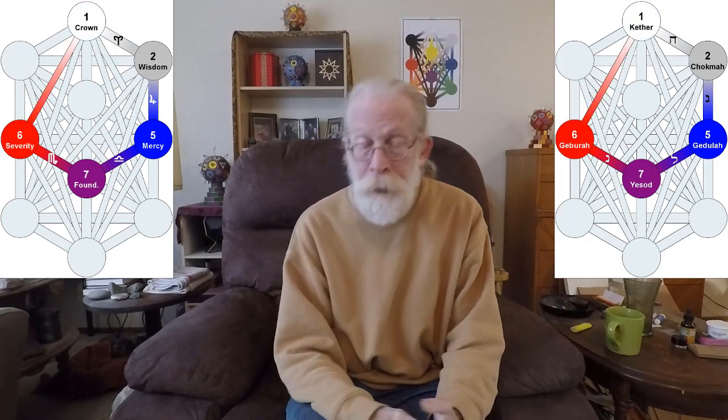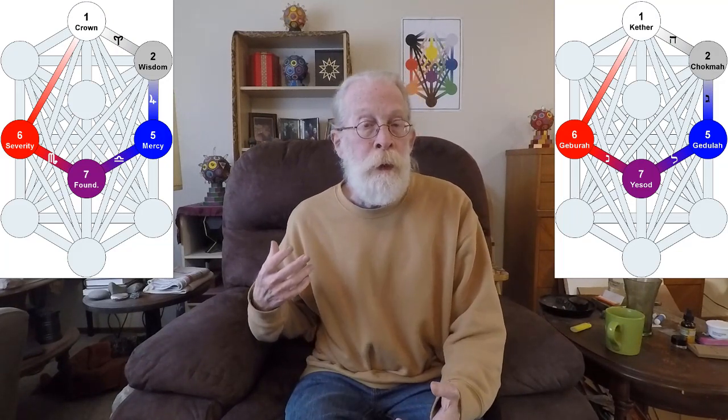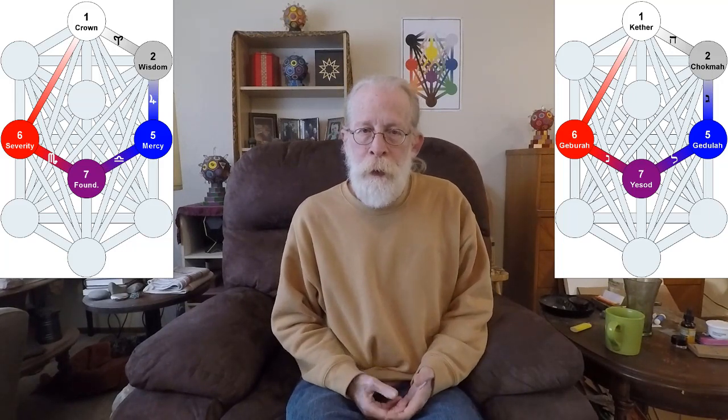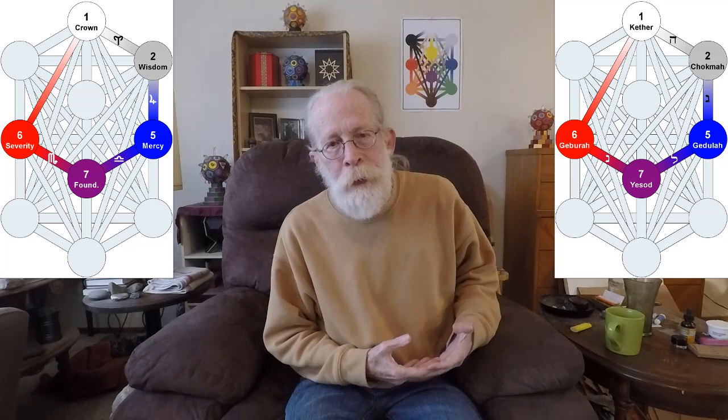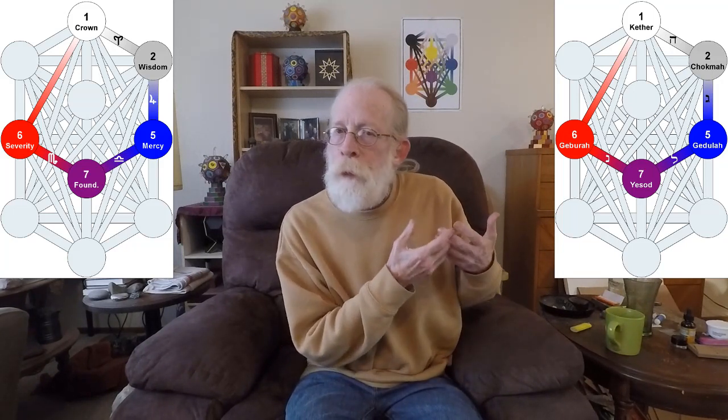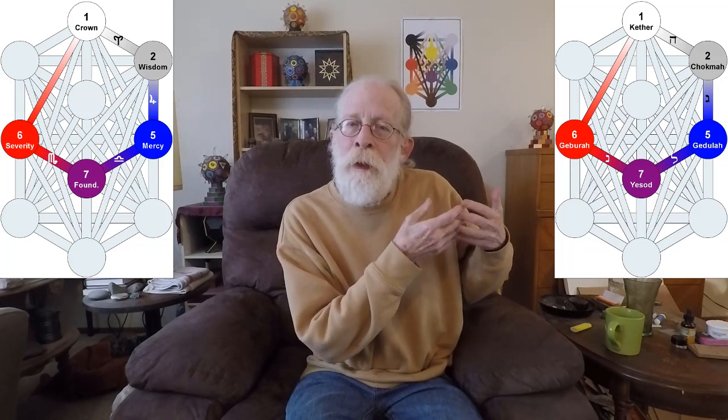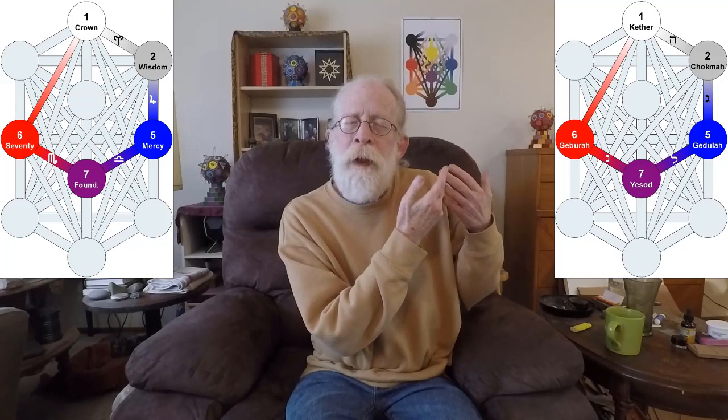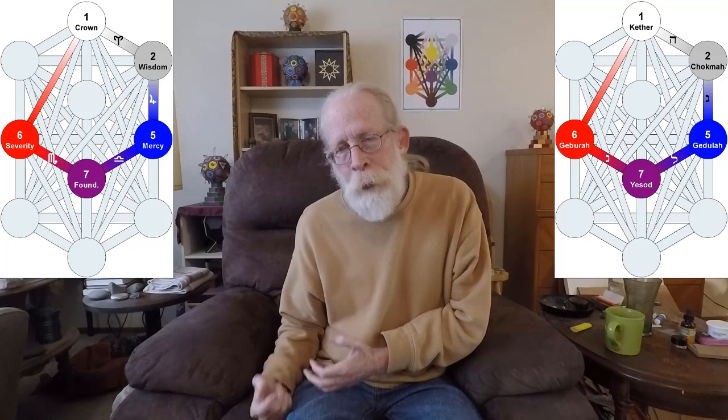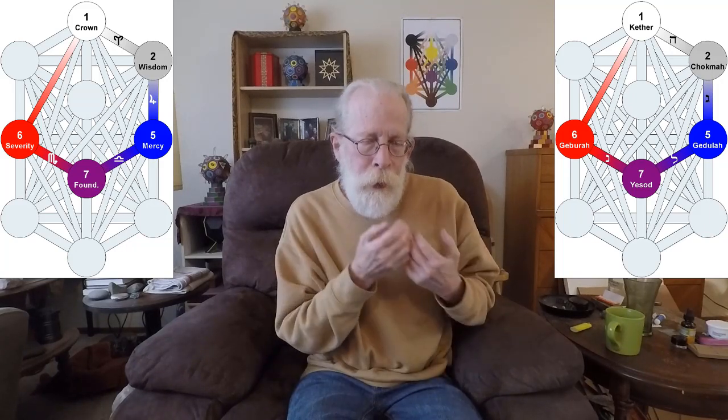The next gate is also a pentangle, and it starts again in Gebura and goes down that path of Scorpio into Yesad, up the path of Lamed into Gedjula, up the path of Gimel to Chokmah, up the path of He to Kether, down quickly from Kether along the hidden path into Gebura, and then back around.